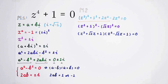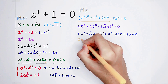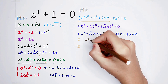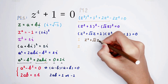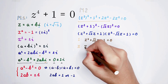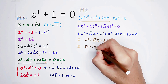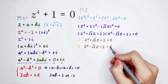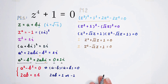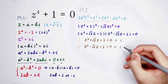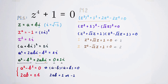The right-hand side is 0. So we have two cases: z squared plus square root of 2 times z plus 1 equals 0 (first case), and z squared minus square root of 2 times z plus 1 equals 0 (second case). Each quadratic has 2 roots, giving 4 roots total. You can solve for these 4 roots yourself.